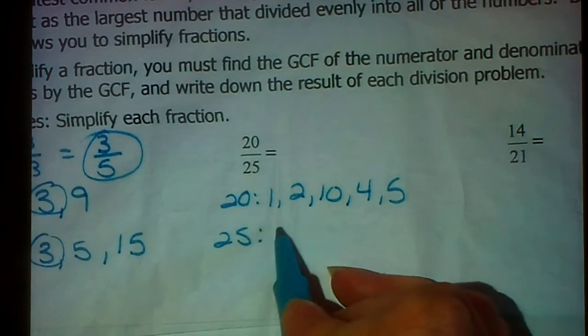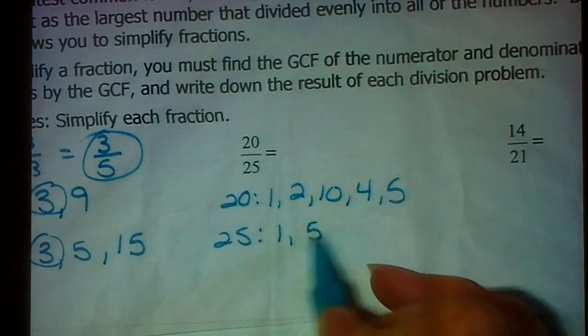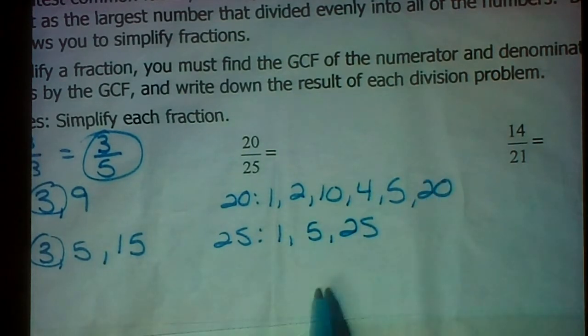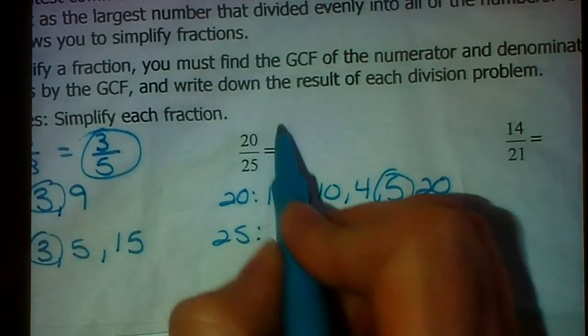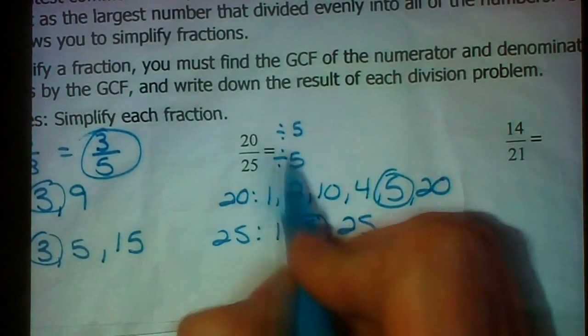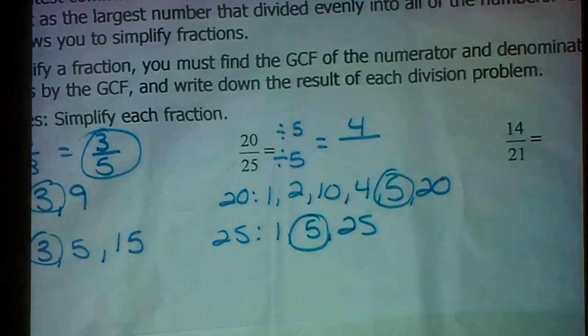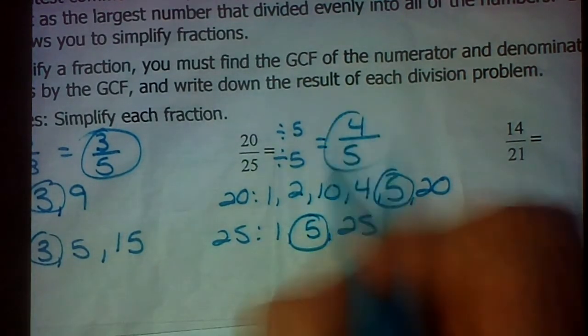What goes into 25? 1, 5, 25. The biggest one they have in common is 5, their greatest common factor. Divide top and bottom by 5. 20 divided by 5 is 4. 25 divided by 5 is 5. So 4 fifths.